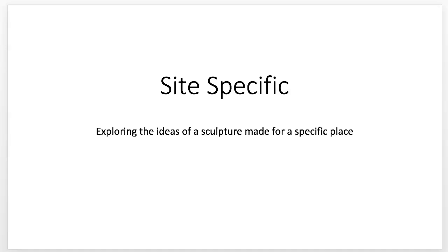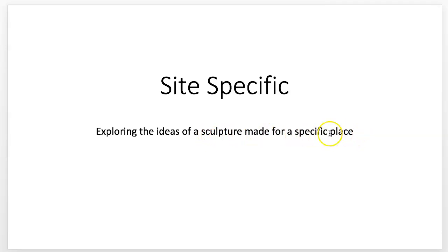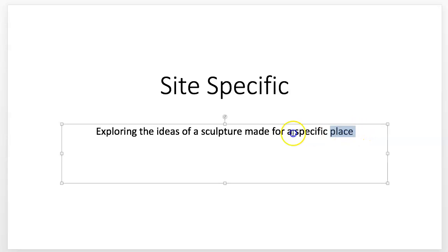Hey class, this is going to be a kind of interesting project and quite different maybe from other things you've done. It's about site-specific sculpture — a type of sculpture that could be made out of almost any material, but the designation really means it's made for a particular or specific place.